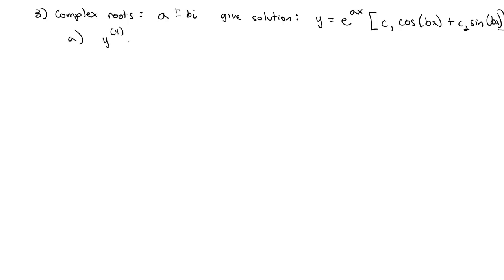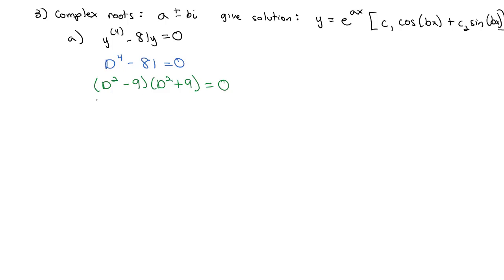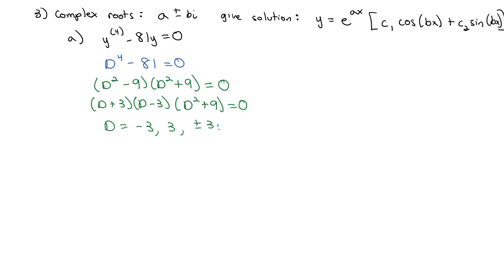Let's look at the 4th derivative of y minus 81y equals 0. The characteristic equation is d^4 − 81 = 0. When we factor this, we get (d² − 9)(d² + 9) = 0, which factors further to (d + 3)(d − 3)(d² + 9) = 0. Setting each factor equal to zero, we find d = −3 and d = 3 from the first part, and subtracting 9 and taking the square root of −9 gives us d = ±3i.